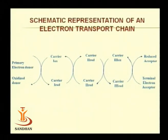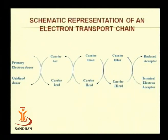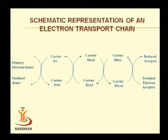Both aerobic and anaerobic respiring organisms undergo electron transport chain. By operation of the electron transport chain, they produce a large amount of energy, and respiratory metabolism yields maximum ATPs. In this particular figure, it is a schematic representation of an electron transport chain, where we can see sequential oxidation and reduction of various carriers.